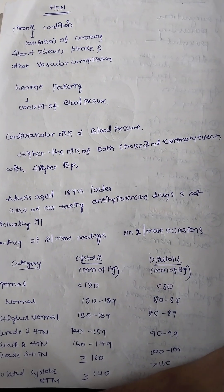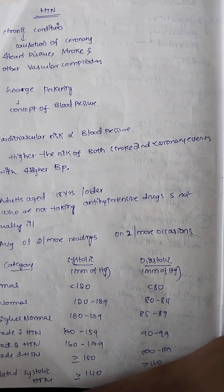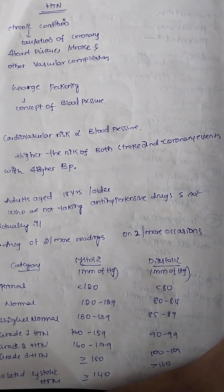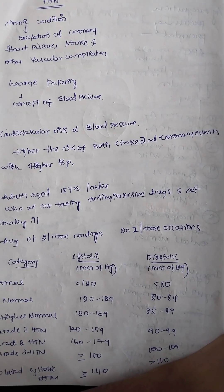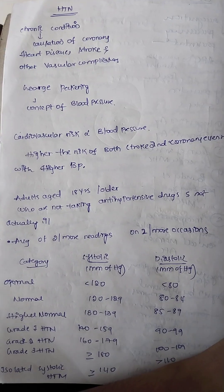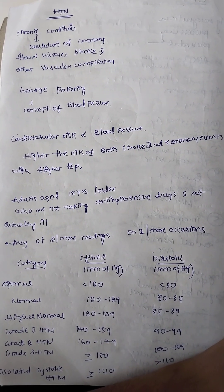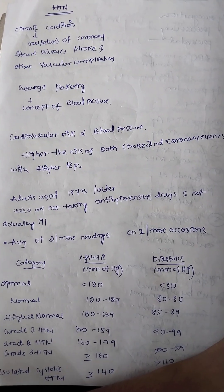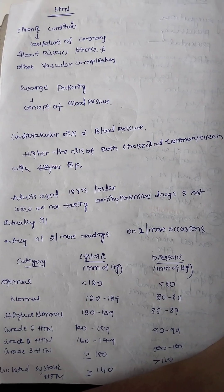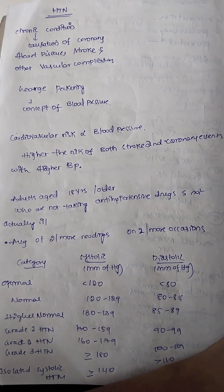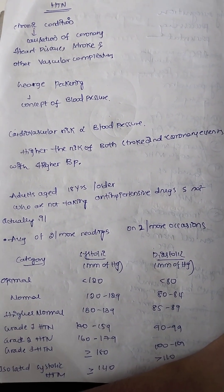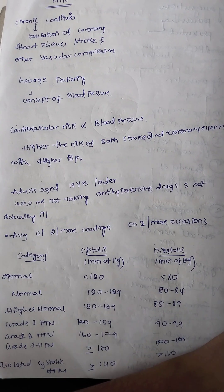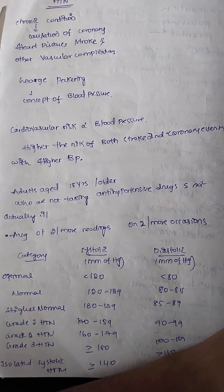What is hypertension? It is a chronic condition which leads to the causation of coronary heart disease, stroke, and other vascular complications. George Packer first gave the concept of blood pressure, and cardiovascular risk is directly proportional to blood pressure — an increase in blood pressure means an increase in cardiovascular risk.